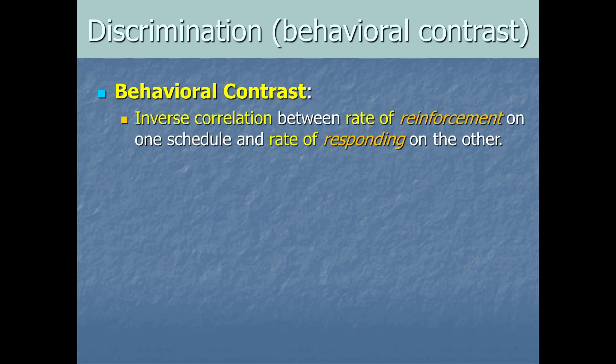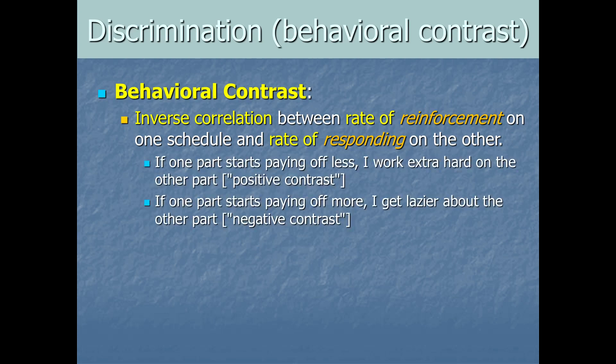You can think of it like the pigeon is contrasting or comparing the two schedules rather than treating them totally independently. So behavioral contrast, we give a definition. We could say it's when we see an inverse correlation between the rate of reinforcement on one schedule and the rate of responding on the other schedule. So if one part starts paying off less, right? It's a change in the rate of reinforcement. One part of those, one schedule starts paying off less. Basically, I work extra hard on the other part. When that happens, we call that positive contrast. So positive behavioral contrast. Whereas if one part starts paying off more than it used to, I'm going to get kind of lazier about the other part, right? And we call that negative contrast. So both of these behavior contrast. It's weird.